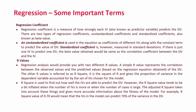There are a few important terms to know before going into detail on how to run regression. The first is the regression coefficient, which is a measure of how strongly each independent variable, also known as the predictor variable, predicts the dependent variable or criterion variable. There are two types: unstandardized regression coefficient, used as a coefficient with the constant term to predict the value of the DV, and standardized coefficient, also known as the beta value, which is measured in standard deviations. If there is just one IV predicting the DV, the beta value would be the same as the correlation coefficient between the DV and the IV.